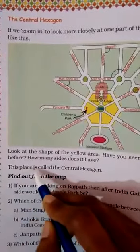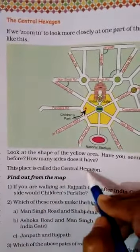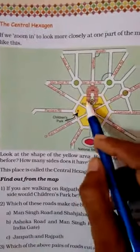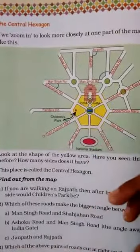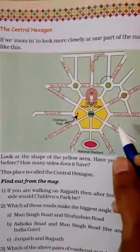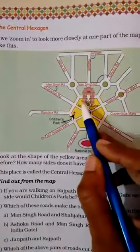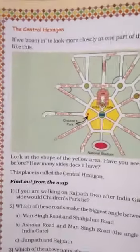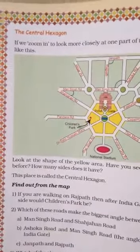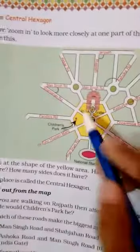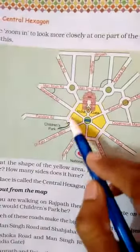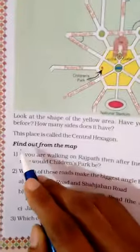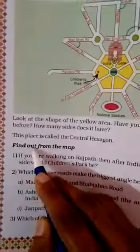This place is called the central hexagon. Children, this place is called the central hexagon. What do you call it? We know that a shape with 6 sides is called a hexagon. Here is the center of the central hexagon — find it out from the map.